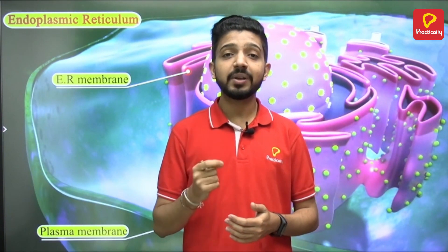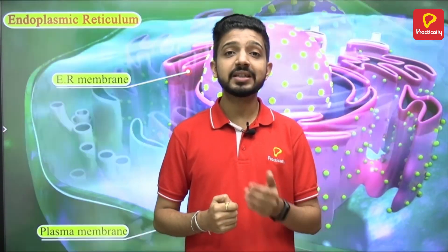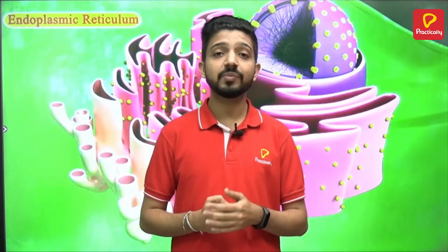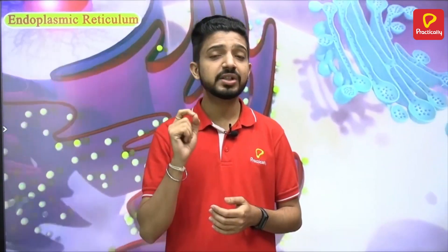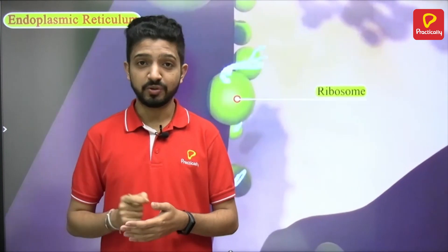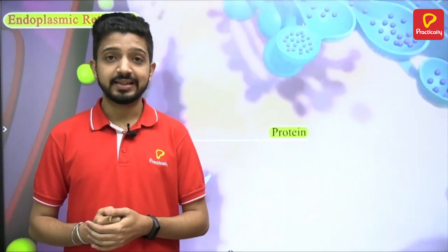The membrane of the endoplasmic reticulum is similar to that of the cell membrane. The endoplasmic reticulum is of two types: the rough endoplasmic reticulum and the smooth endoplasmic reticulum. What makes them different is the presence of tiny granules observable under a microscope called ribosomes. The ribosomes are the site of protein synthesis.